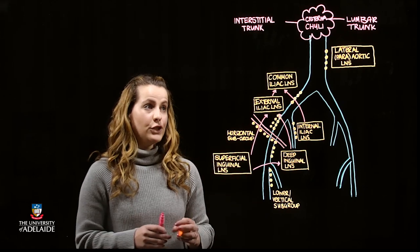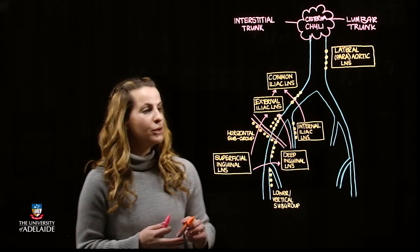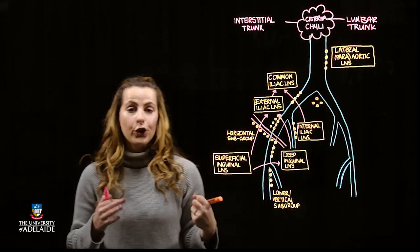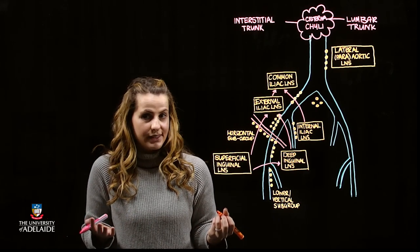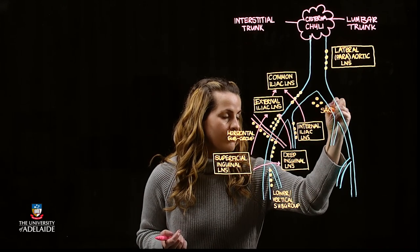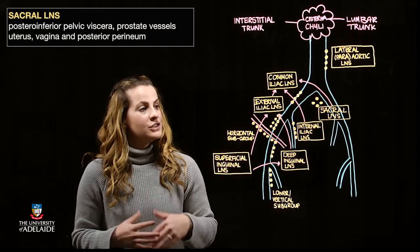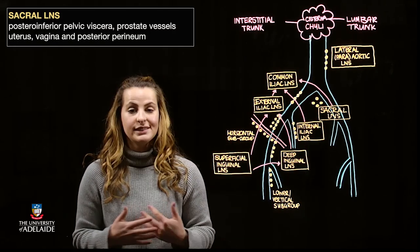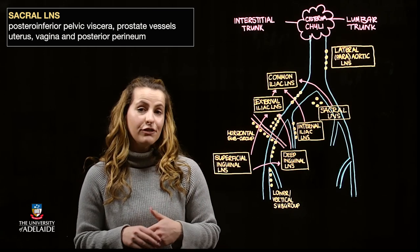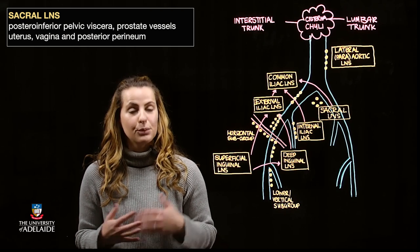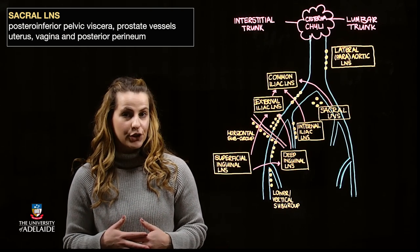The final contribution to the common iliac lymph nodes is a couple of tiny lymph nodes located just anterior to the sacrum, which are called the sacral nodes. The sacral lymph nodes specifically receive efferent lymphatic drainage from the postero-inferior pelvic viscera, as well as the prostatic vessels, the uterus, vagina, and posterior perineum.